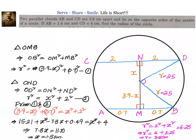Let us recap this problem. We were given two parallel chords AB and CD of lengths 1.4 and 4 centimeters respectively, lying on opposite sides of the center, with a distance of 3.9 centimeters between them. We divided that distance into two parts X and (3.9 − X), set up two equations using Pythagoras theorem, solved to get X equals 1.5, and substituting back we obtained the radius R equals 2.5 centimeters.